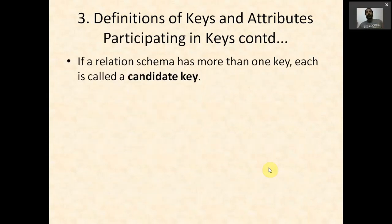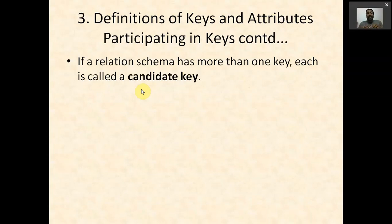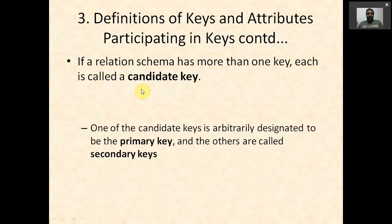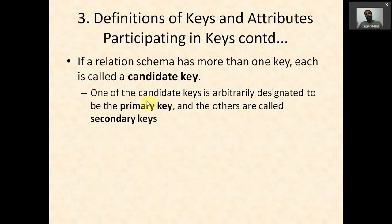If a relation schema has more than one key, each is called a candidate key. For example, in a student table, admission number, roll number, and Aadhar number are all keys and thus candidate keys. One among the candidate keys is chosen as the primary key, and the remaining keys are known as secondary keys.